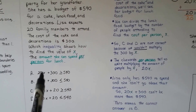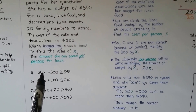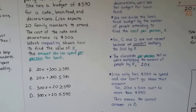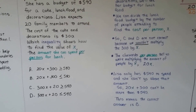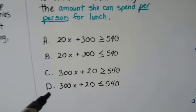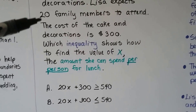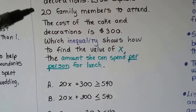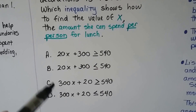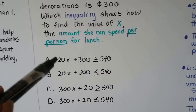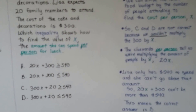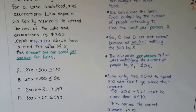X is how much she can spend per person for lunch. C and D are not correct because we wouldn't multiply the $300 for the cake and decorations by the cost per person — we're trying to find the cost per person. There are 20 people, so we're going to multiply the 20 people times the amount per person. We can cross out C and D right away and eliminate them.